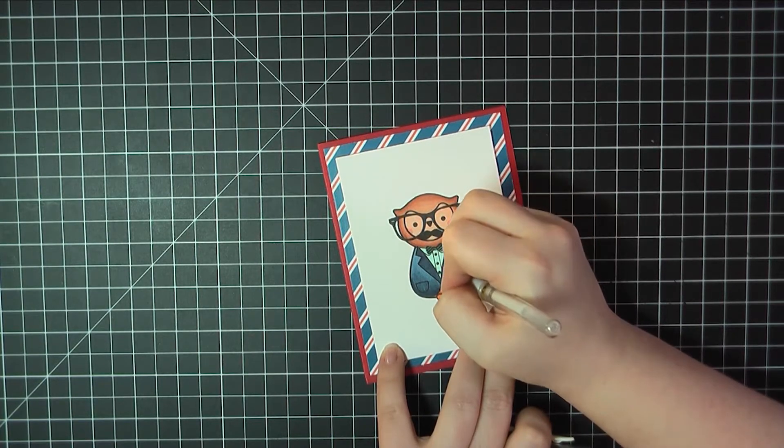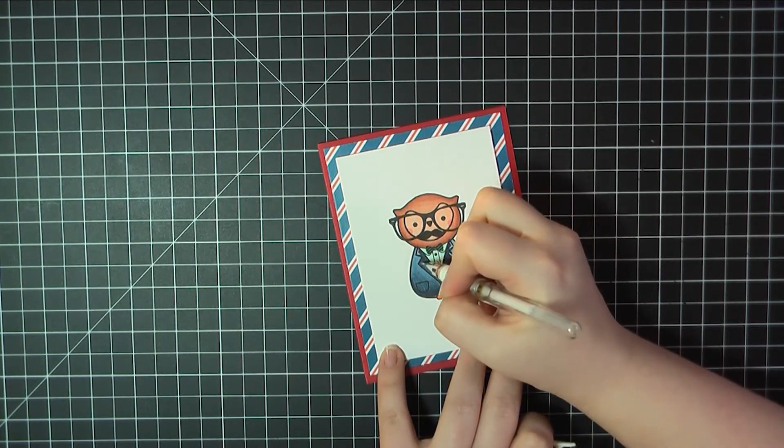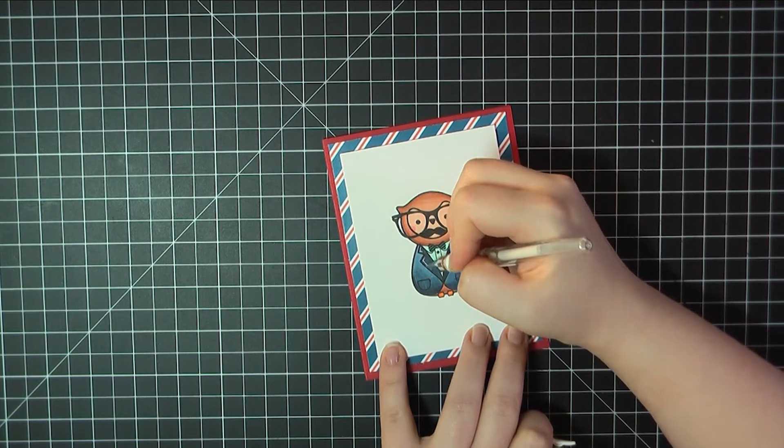Here, I'm using my Uniball Signo White Gel Pen just to leave a little accent on the lapel and pockets of his jacket.